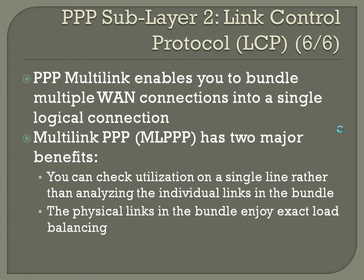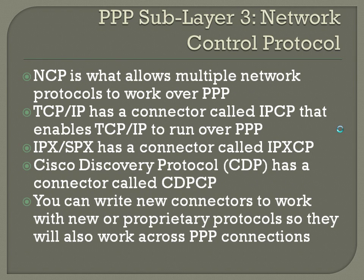Sub-layer number 3 is NCP, or Network Control Protocol. NCP is what allows multiple network protocols to work over PPP. TCP/IP has a connector called IPCP that enables TCP/IP to run over PPP. For IPX/SPX, there is a connector called IPXCP. Cisco even engineered a connector called CDPCP so that Cisco Discovery Protocol can work over PPP. If a new protocol is ever developed, you can write a new connector for it, making PPP a valid long-term protocol regardless of how network technology advances.